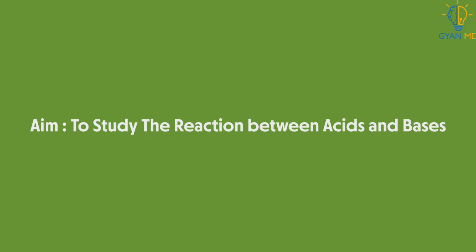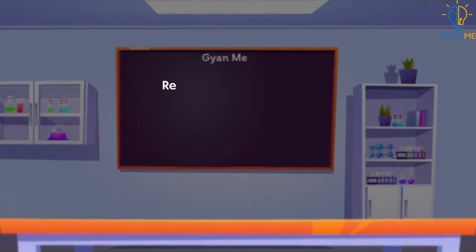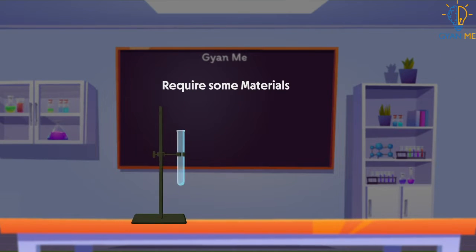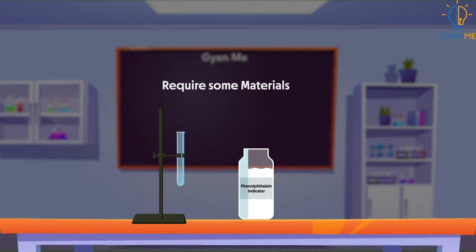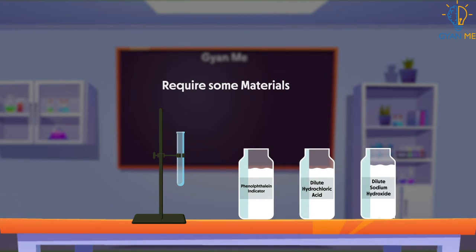Here our aim is to study the reaction between acids and bases. For this, we require some materials like a test tube, a stand, phenophthalein indicator, dilute hydrochloric acid and dilute sodium hydroxide.